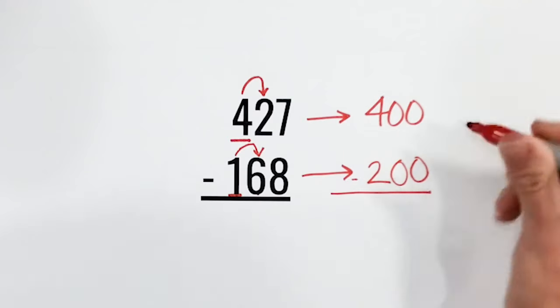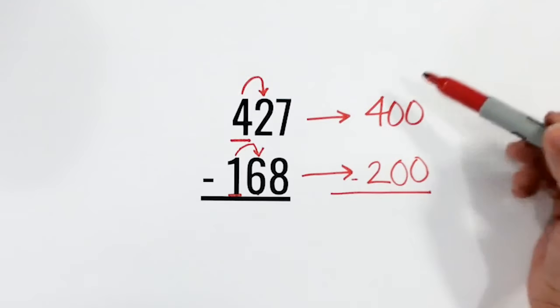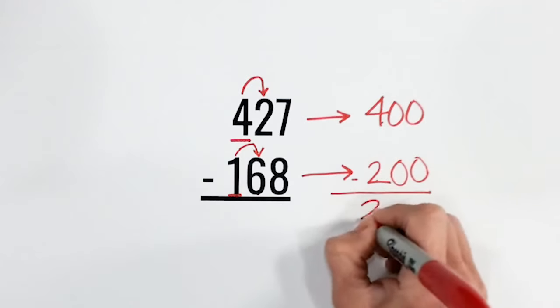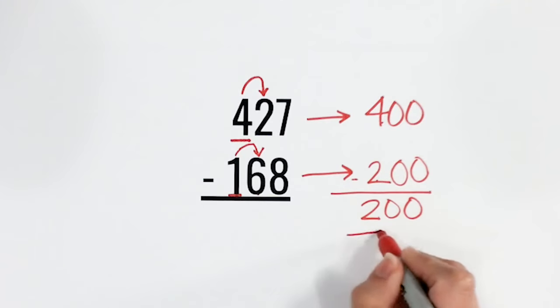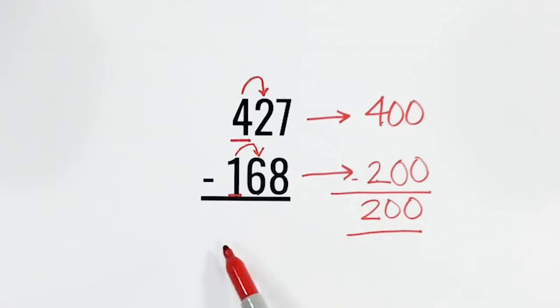So my new problem is 400 minus 200. So I want to find the difference of that to get a good estimate. So 4 minus 2 is 2 and the rest are 0s. So 400 minus 200 is 200. So my estimate for this problem is 200, which means the answer to this problem, the difference, will be somewhere close to 200.